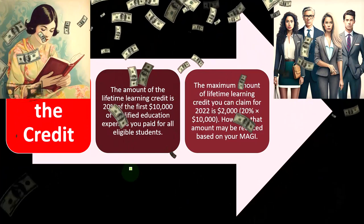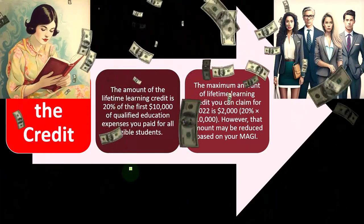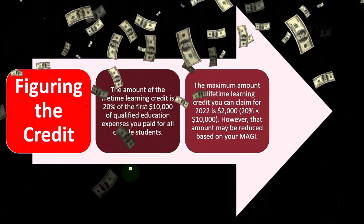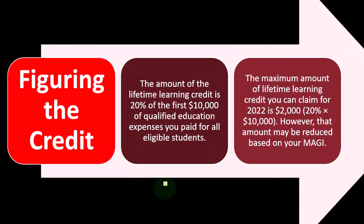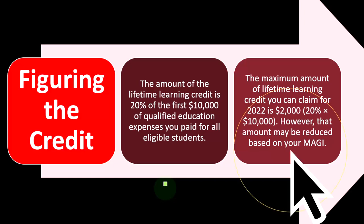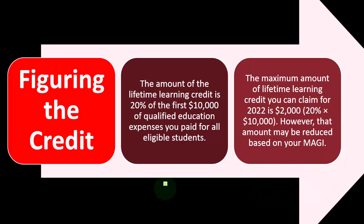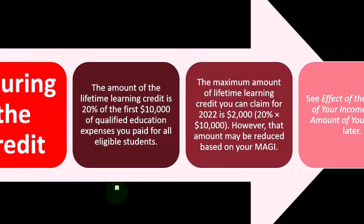The maximum lifetime learning credit for 2022 is $2,000 — that's 20% of $10,000. However, that amount may be reduced based on your MAGI, your modified adjusted gross income. That income phase-out is generally based not on gross income but on adjusted gross income with a slight modification, usually due to foreign income. So the credit could be lower based on your income level.